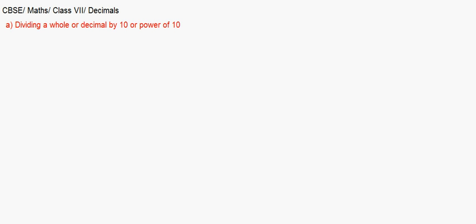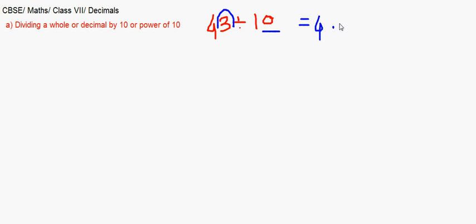For example, take the whole number 43 divided by 10. The decimal point, though not visible in the whole number, is at the end. Because there is one zero, the decimal moves one place to the left — so the answer becomes 4.3. This is a decimal division.